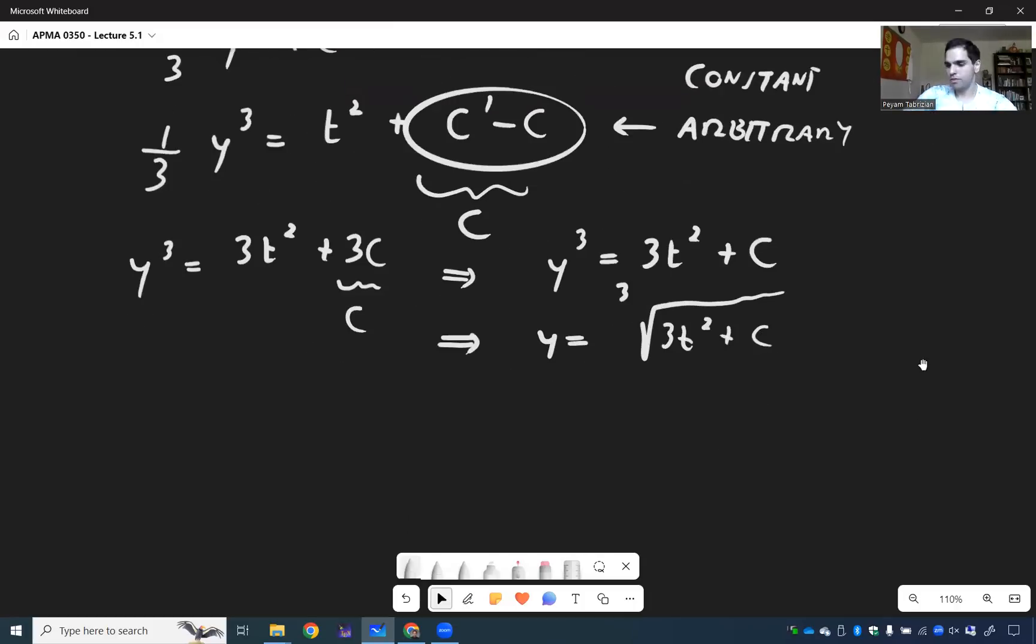And that's your solution. So let me write this down. y is cube root of 3t squared plus c.